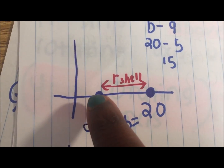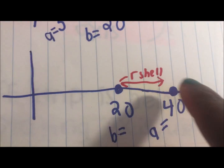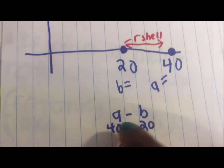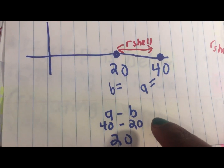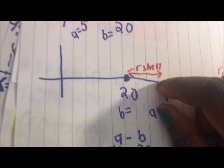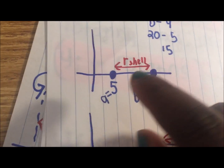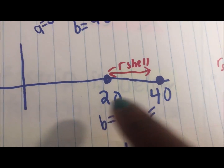But what if I put a all the way over to 40? Now what's r_shell — what's the distance between these two points? You would do a minus b this time around, not b minus a like before. You'd do 40 minus 20, which is 20. When a was on the left side of b, you did b minus a; when a was on the right side of b, you did a minus b. See how it switched up?